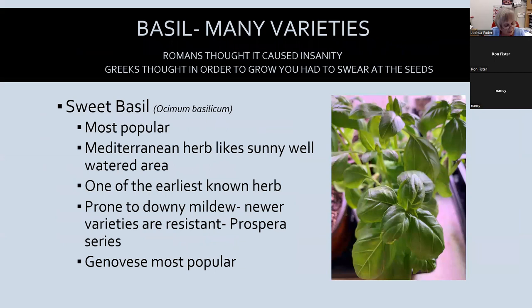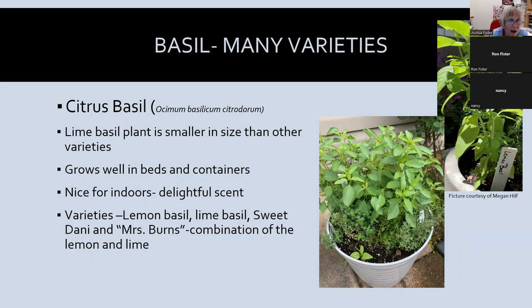Let's talk about some varieties, starting with annuals. Basil is probably the most popular — the sweet basil variety is Genovese, which is what you see most in stores and nurseries. It's a Mediterranean herb that likes to be kept moist and doesn't like hot afternoon sun. Romans thought it caused insanity and Greeks thought you had to swear at the seed to grow it! It is prone to downy mildew, but they've developed resistant varieties — the Prospera series is one.